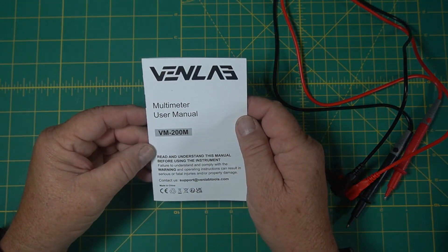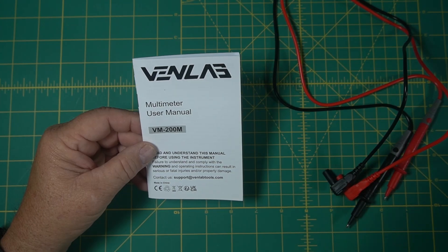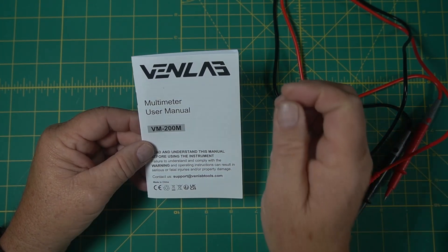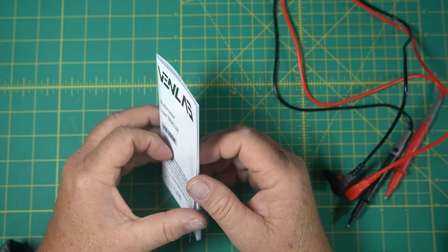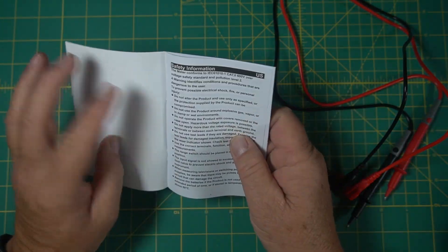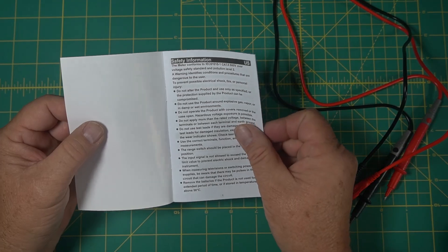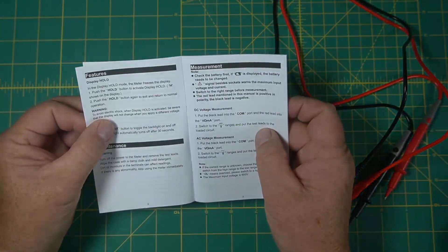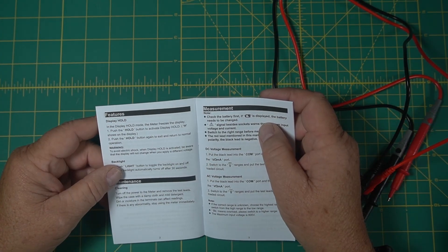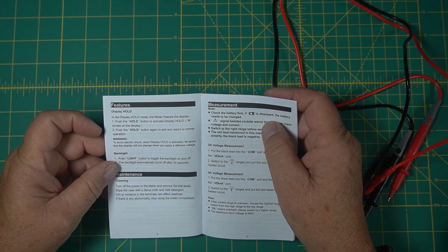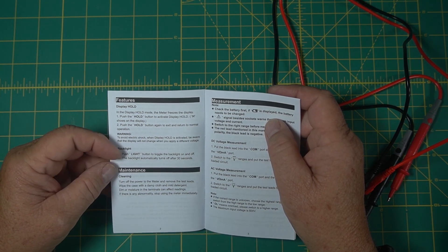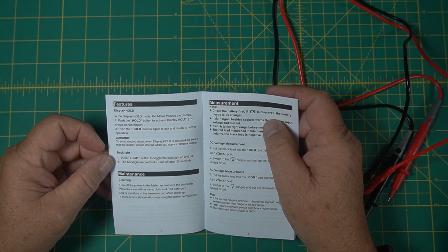The VM200M. Read and understand the manual before using this instrument. That's a good thing to do probably with these things. It has a bunch of safety stuff here. This is the US version. Features: It has a display hold, so that will hold your readings when you have them there. It has a backlight with a light button.